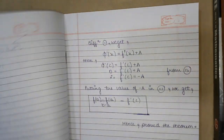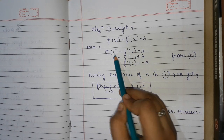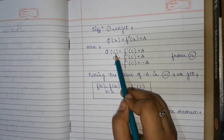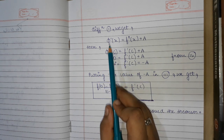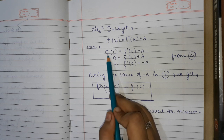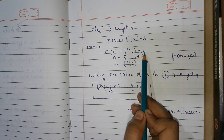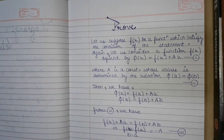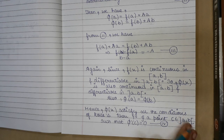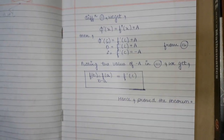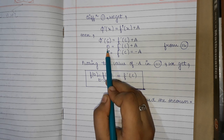Now putting x = c in this expression, we get φ'(c) = f'(c) + A. Since from equation 4 we know φ'(c) = 0, we substitute to get 0 = f'(c) + A, which gives us f'(c) = minus A.